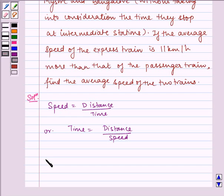Now, let the speed of the fast train is equal to x km per hour.